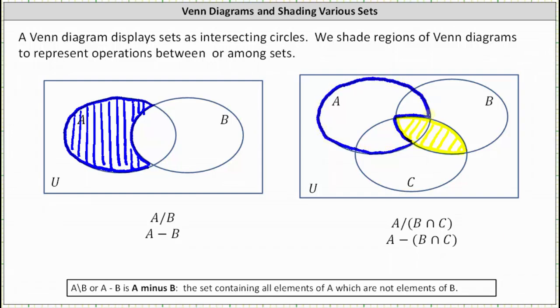So now that we have the blue region, let's go ahead and erase the yellow region and shade the blue region. This blue region represents the set of elements that are in A which are not in B intersect C. The blue region is A minus B intersect C.